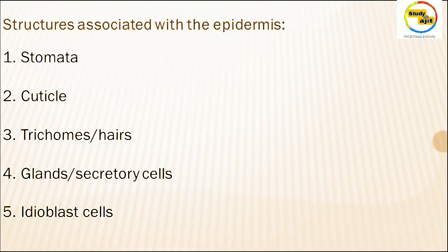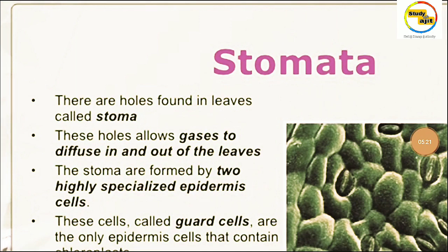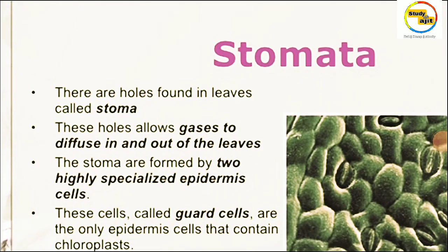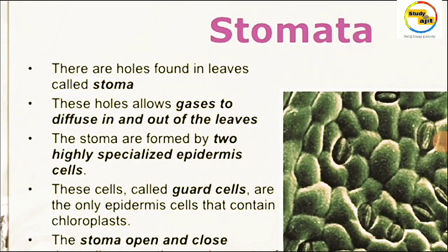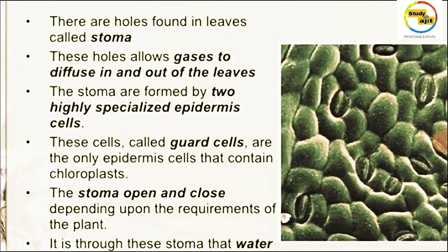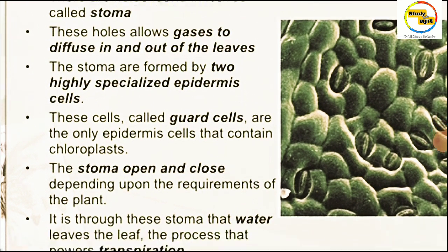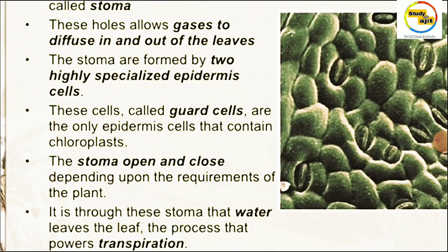There are holes found in leaves called Stomata. Stomata allow gases to diffuse in and out of the leaves. These holes are formed by two highly specialized epidermal cells called guard cells.